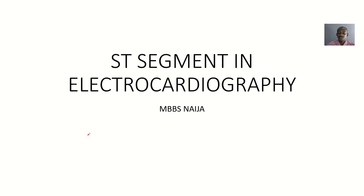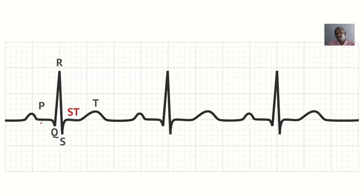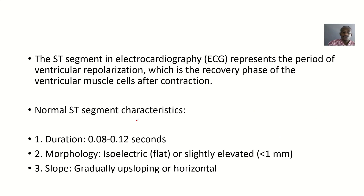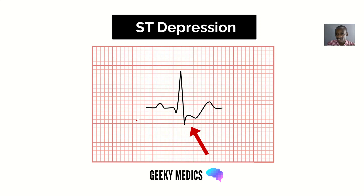The next part of the electrocardiogram tracing, or ECG, that we'll be looking at is the ST segment. The ST segment is the distance from S to T. That part of the wave is known as a segment. We'll be defining it and looking at several pictures to show you where the ST segment is.